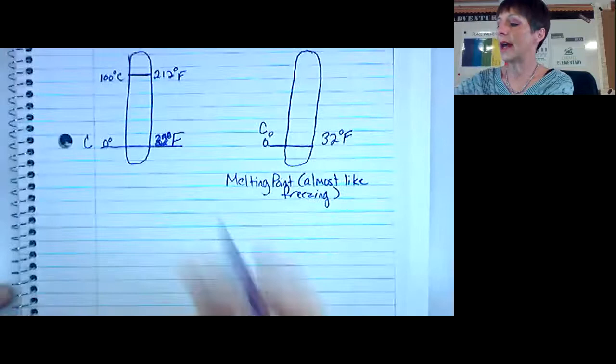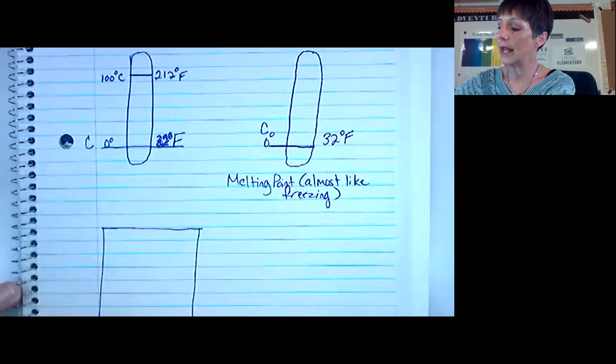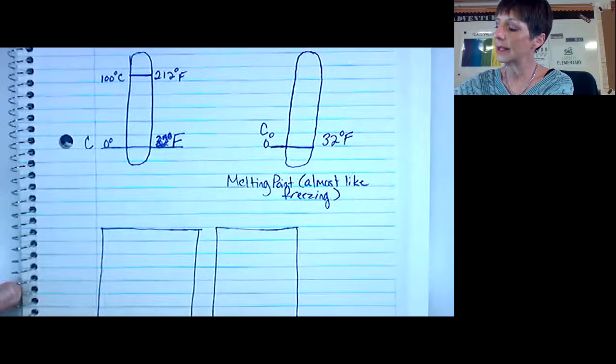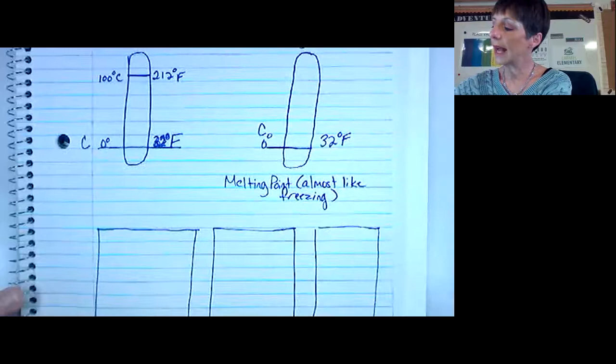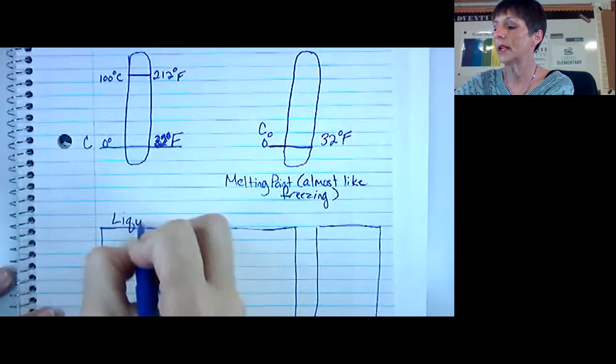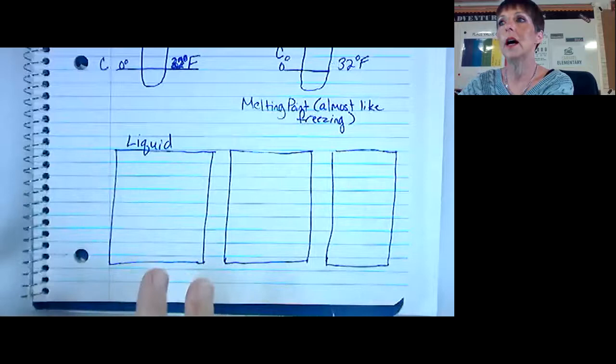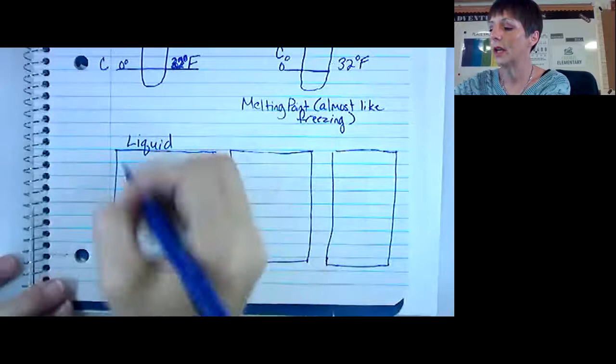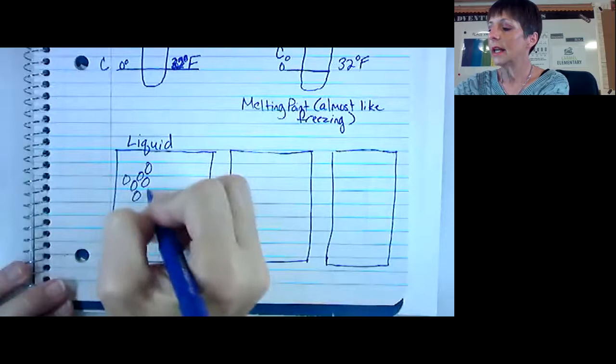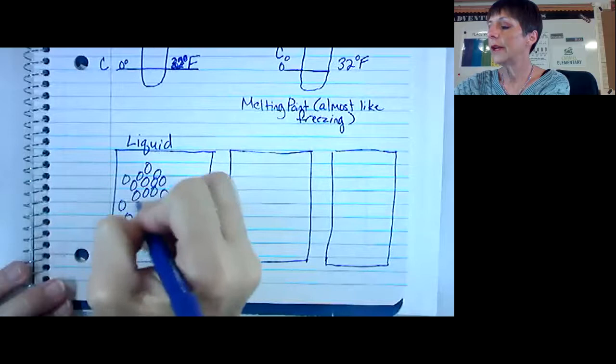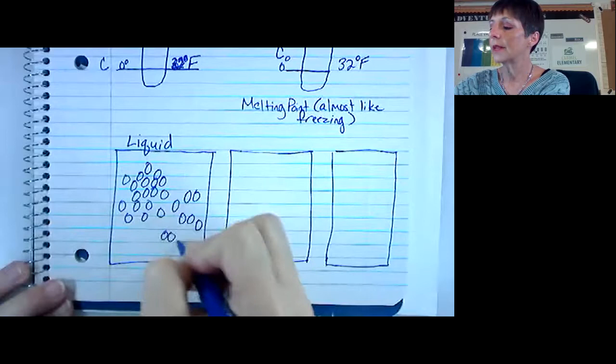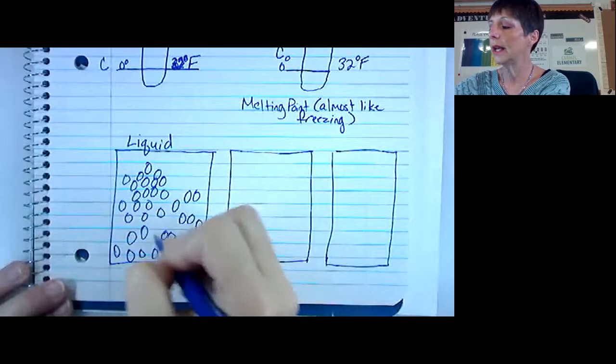We learned that whenever we add temperature, it makes a change to the particles inside every piece of matter. So here's what happens when we have a liquid. The particles in a liquid, they're free flowing. They can fill up anything, so they're not really tight together. We're going to write them, they're not necessarily touching. But these are the particles in water and they're kind of free floating, but they're still filling in pretty full. This is why a liquid can take up any shape that you pour it in, because the particles are kind of loose.